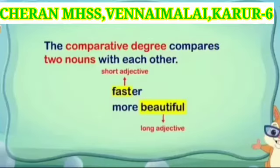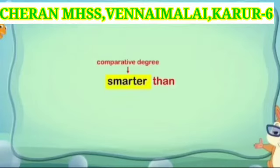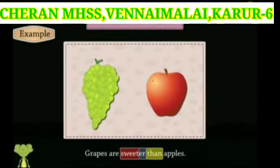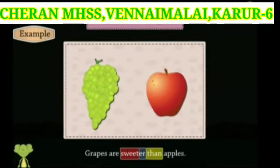The comparative degree compares two nouns with each other. It is mostly formed by adding the suffix -er to short adjectives having one or two syllables, and adding 'more' before long adjectives having two or more syllables. 'Than' is used after the comparative degree. For example, 'Grapes are sweeter than apples.' Here, the adjective 'sweeter' is the comparative form of the adjective 'sweet'. The word 'sweeter' is formed by adding -er to the adjective 'sweet', and it is followed by 'than'.